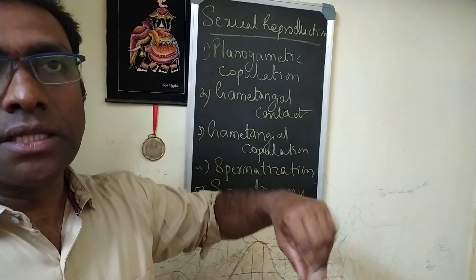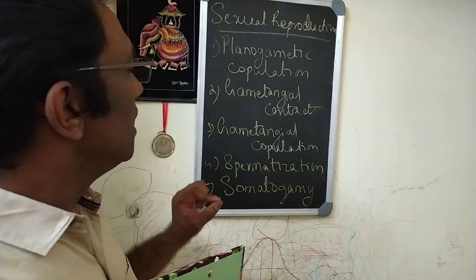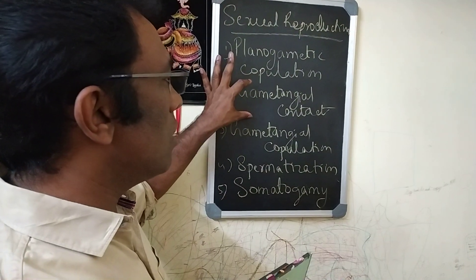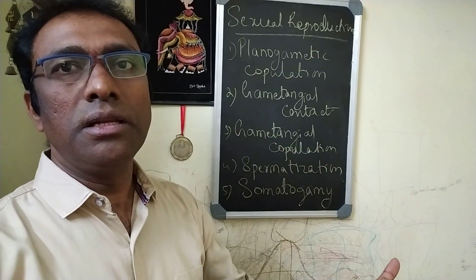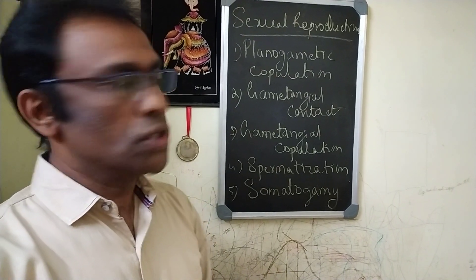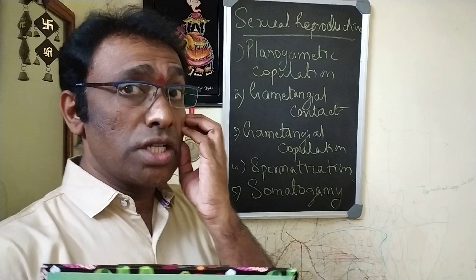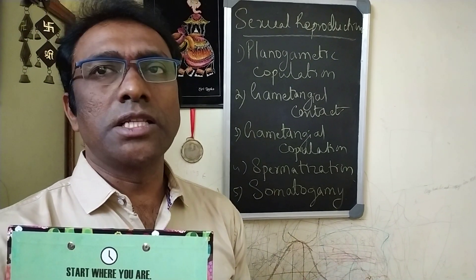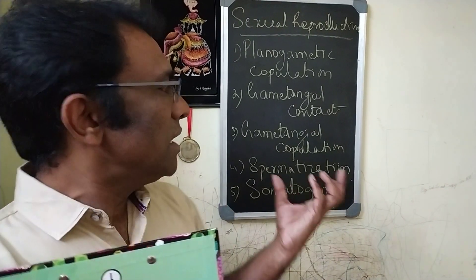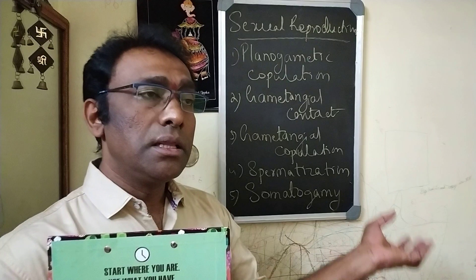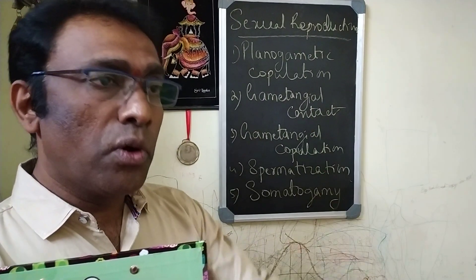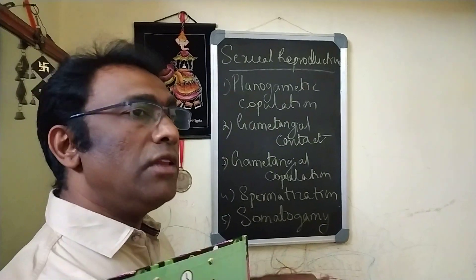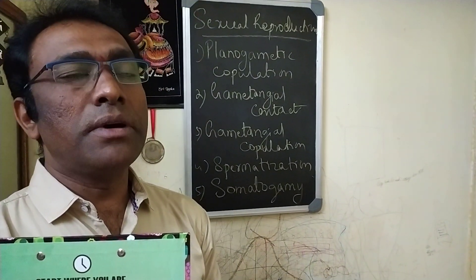Planogametic copulation means gametes meet in the environment, such as water, where flagellated spores come and fuse with each other. Gametangial contact involves major sex organs — the male and female sex organs come closer and bring about fusion. Gametangial copulation involves similar sex organs designated plus and minus strains, but no prominent distinct sex organs. Spermatization means a spore released from a structure reaches another mycelium of different genetics and brings about fusion.